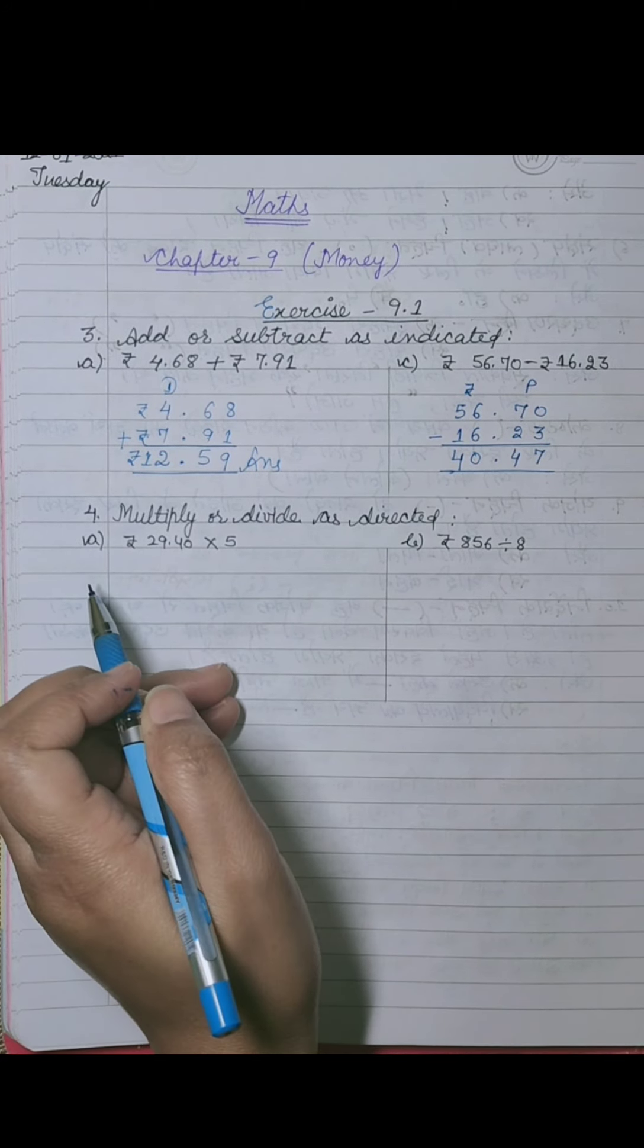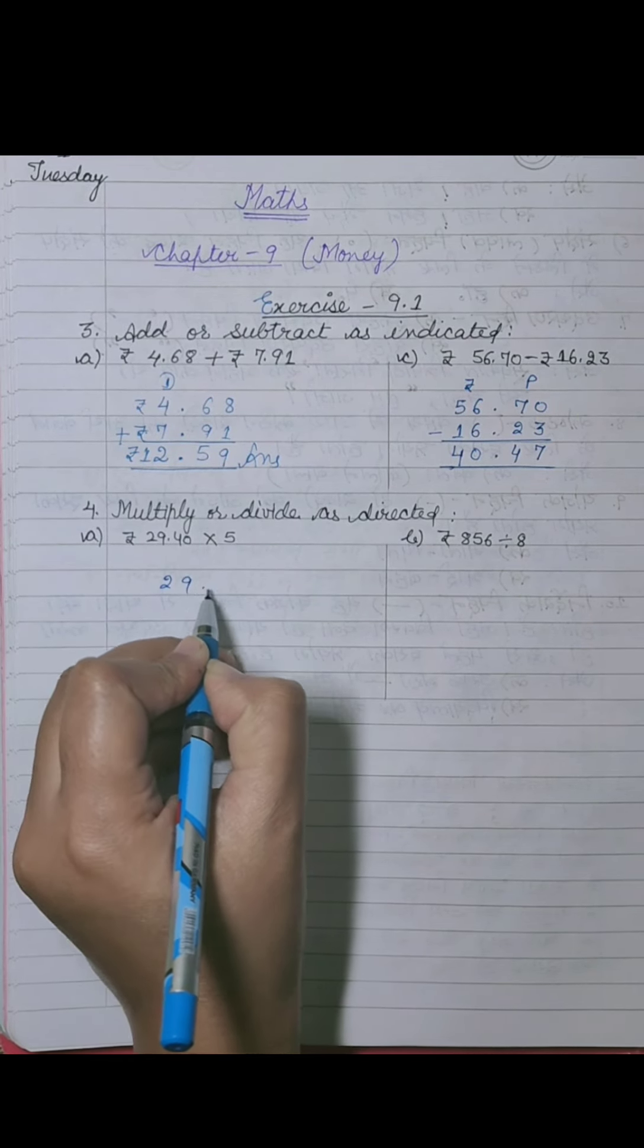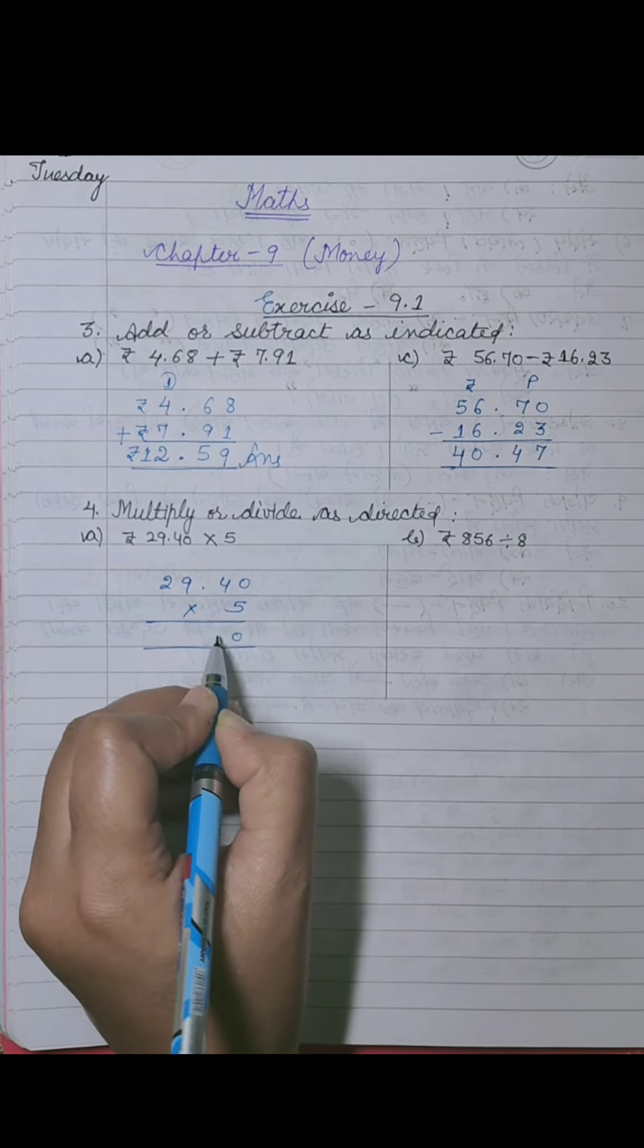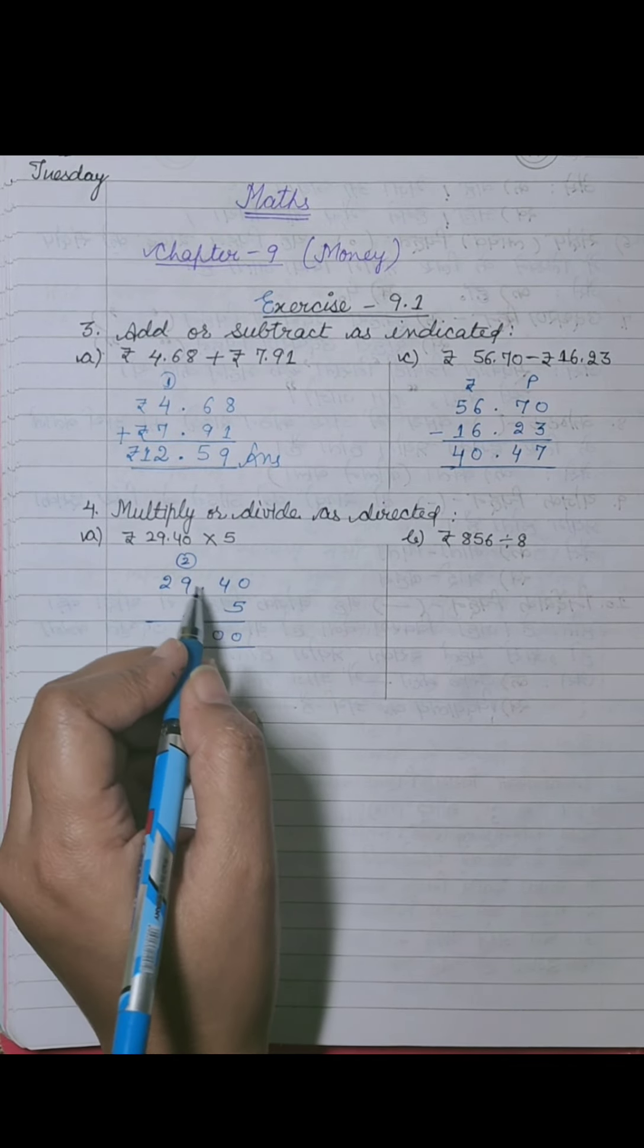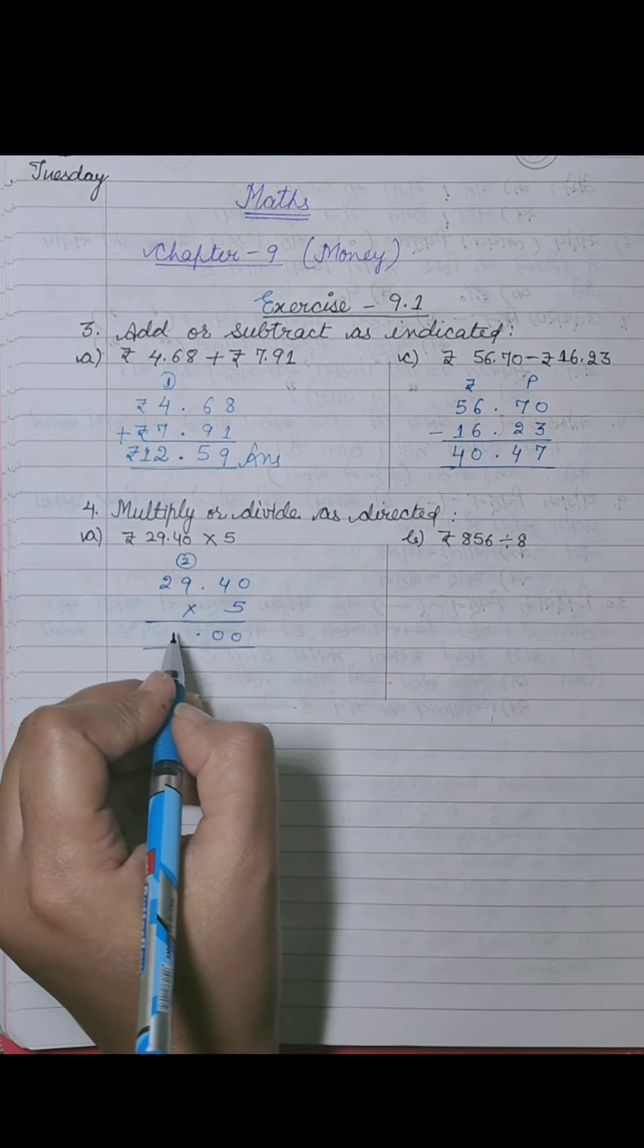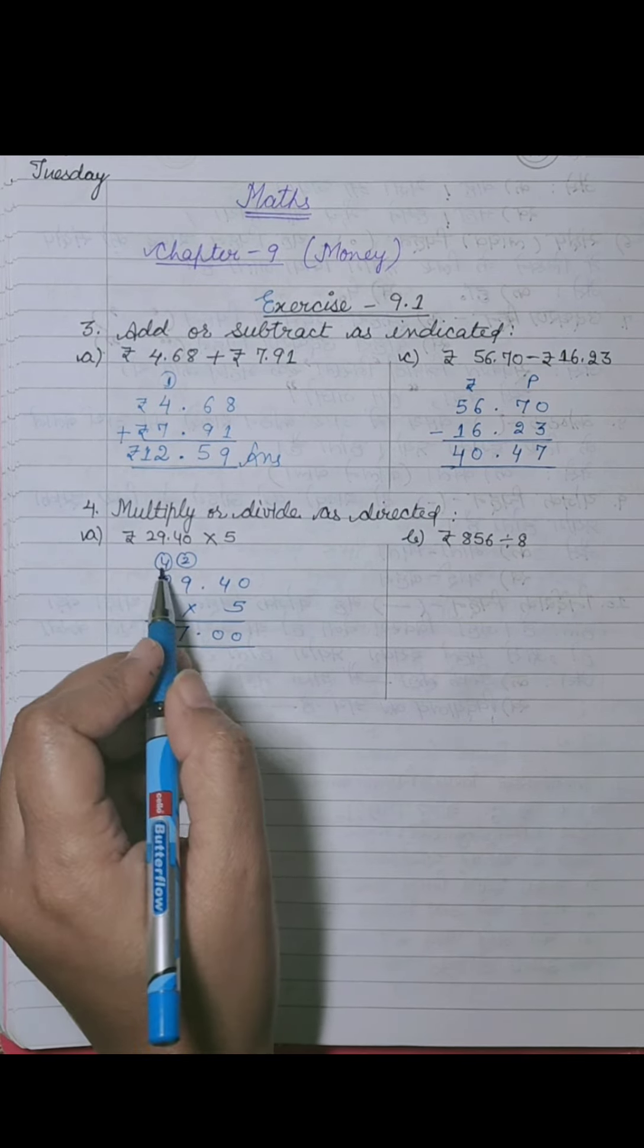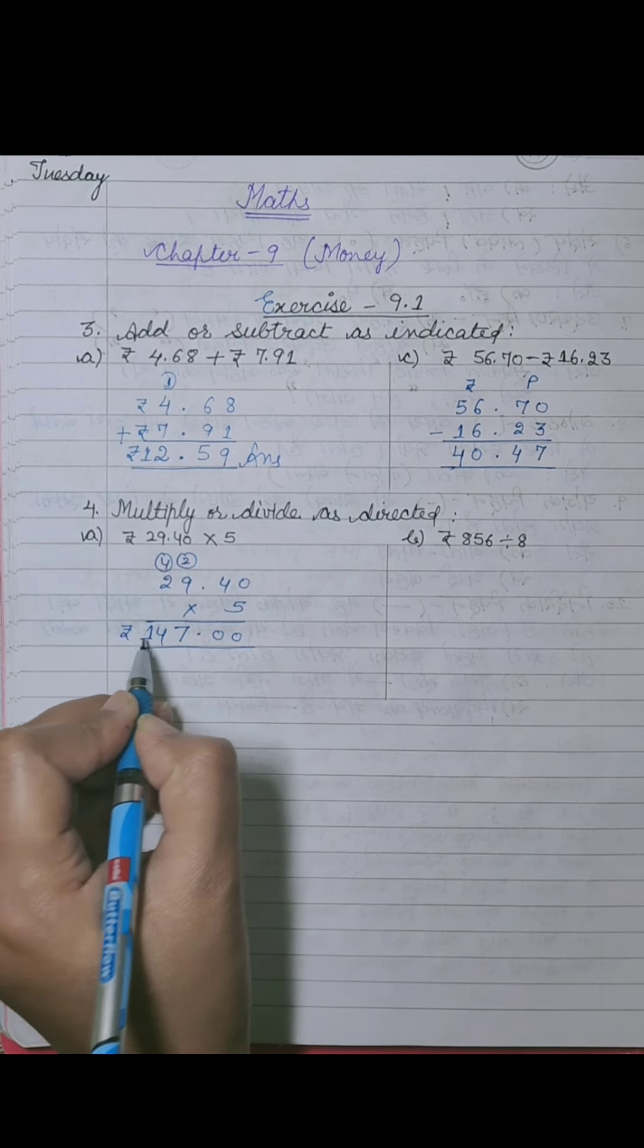Next, the fourth sum is multiply or divide as directed. First sum is multiplication: rupees 29.40 into 5. We will multiply these values. 5 times 0 is 0, 5 times 4 is 20, 2 will carry over. 5 times 9 is 45 plus 2 is 47, 4 will carry over. 5 times 2 is 10 plus 4 is 14. So it equals 147 rupees.